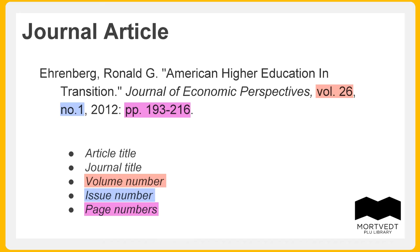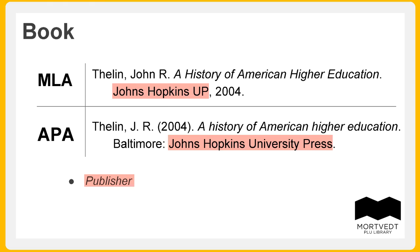To determine if a citation is for a book, look for the name of the publisher. Depending on the citation style — MLA or APA — you may also see the city where the book was published.